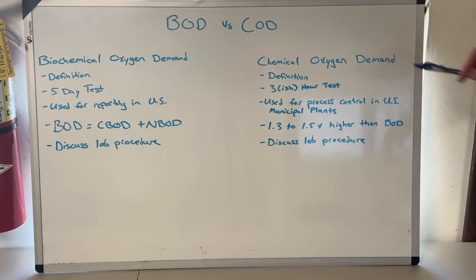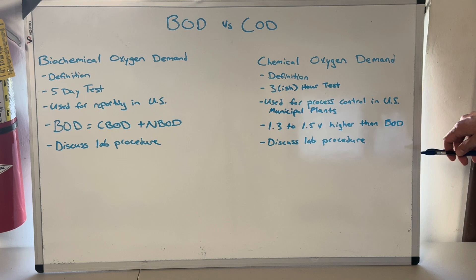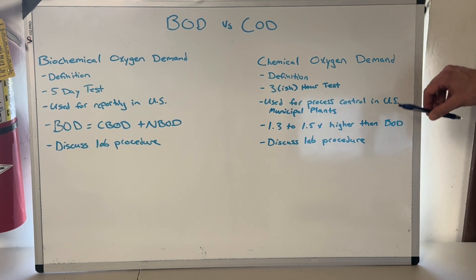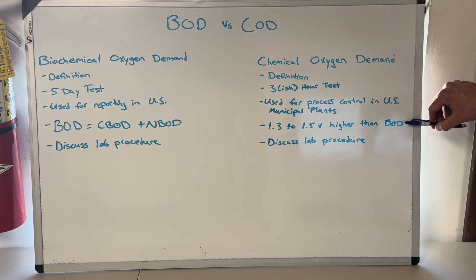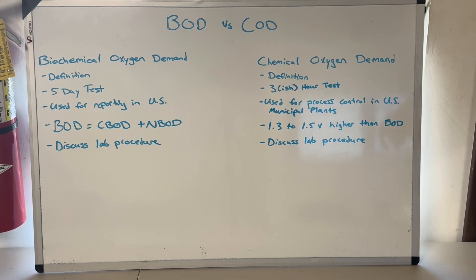As a quick example: say your target BOD for your effluent is 10 milligrams per liter for a municipal waste treatment plant. If you do a COD test and it comes back at 10 mg/L, you're actually lower than your target theoretically — that's fine. But if that COD test comes back at 30 mg/L, you might have a problem. It's just a trigger to say, 'Hey, look closer,' and catch the issue before it really becomes a problem.